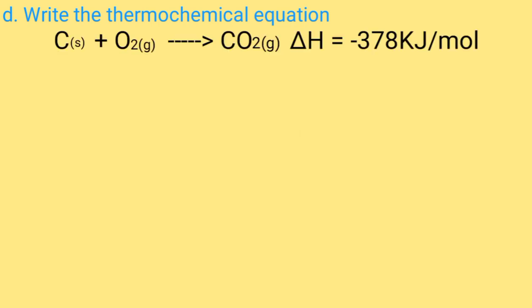Part d: Write the thermochemical equation. When you're writing a thermochemical equation, you write a balanced chemical equation then include enthalpy change. The thermochemical equation therefore would be: C(s) + O₂(g) → CO₂(g), enthalpy change negative 378 kilojoules per mole.